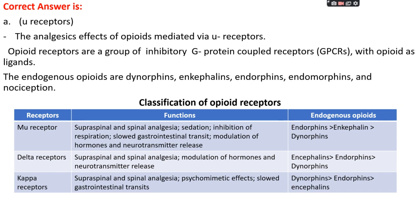Opioid receptors are pain receptors — a group of inhibitory G protein-coupled receptors with opioids as ligands. Endogenous opioids in our body include dynorphin, enkephalin, endorphin, endomorphine, and nociceptin; these are released by the body to decrease pain. There are mainly three types of opioid receptors: mu, delta, and kappa receptors.